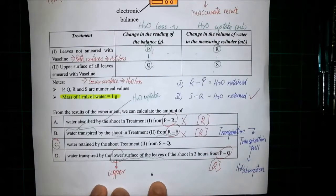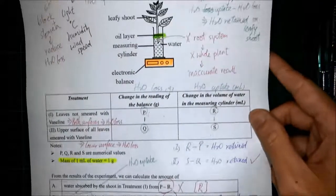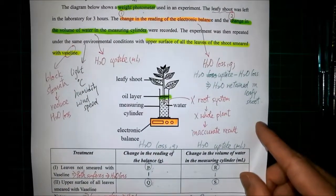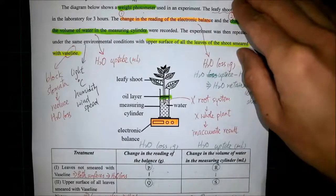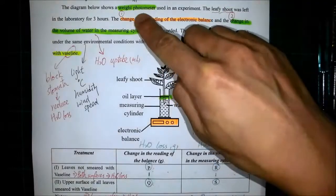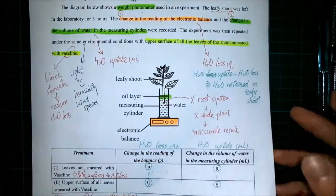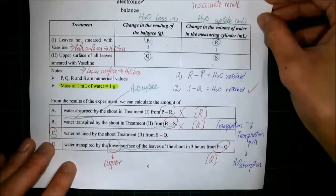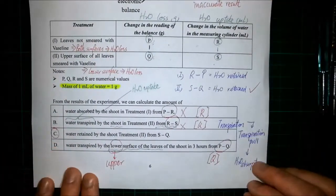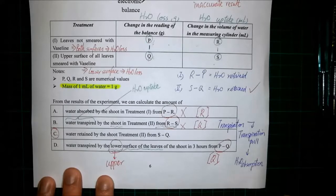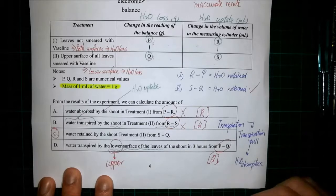In this question, we learned about the importance of the waste potometer and how to identify which answer is correct or wrong, and how to correct incorrect statements to make them accurate.